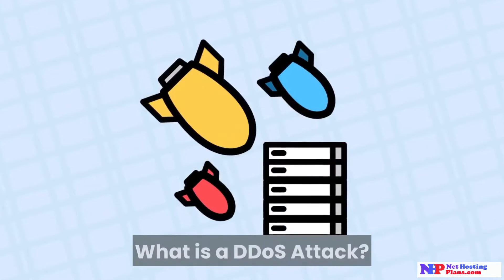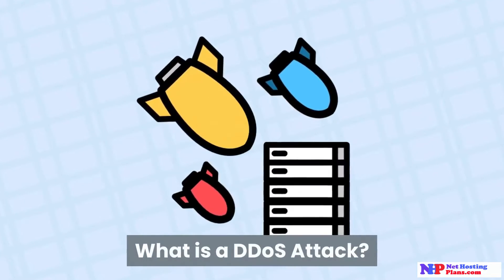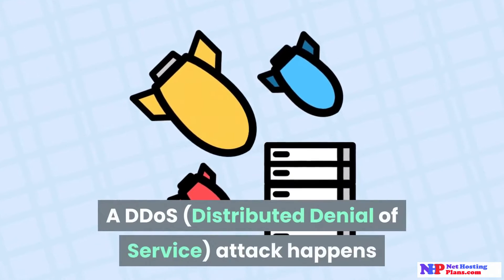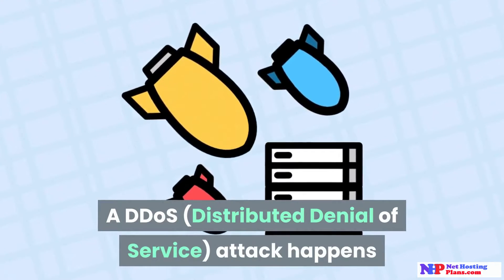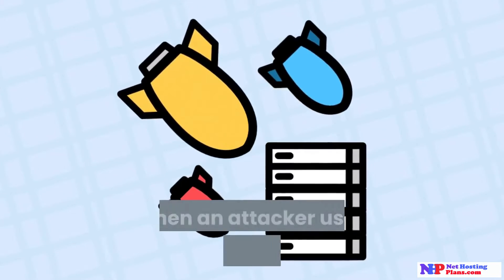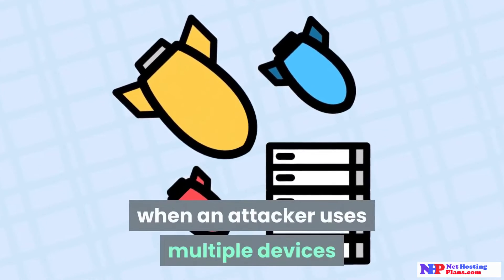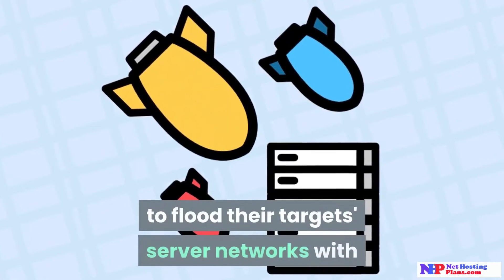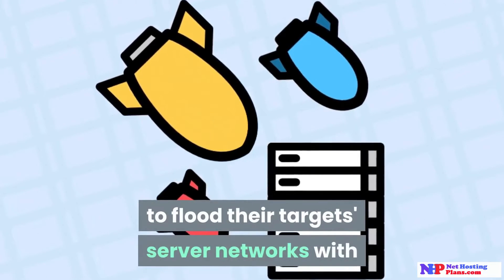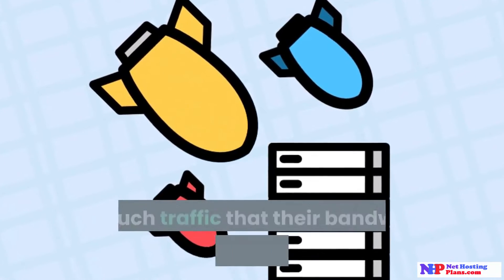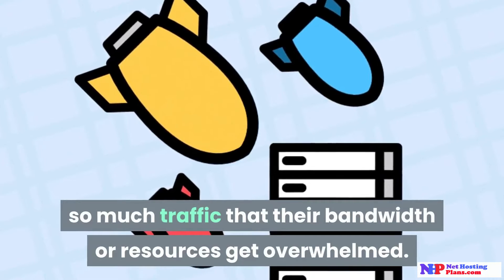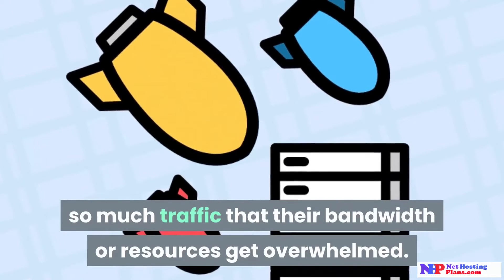What is a DDoS attack? A DDoS, Distributed Denial of Service attack, happens when an attacker uses multiple devices to flood their target server networks with so much traffic that their bandwidth or resources get overwhelmed.